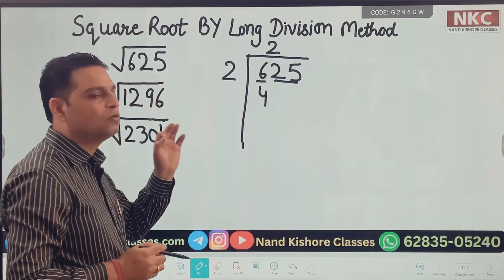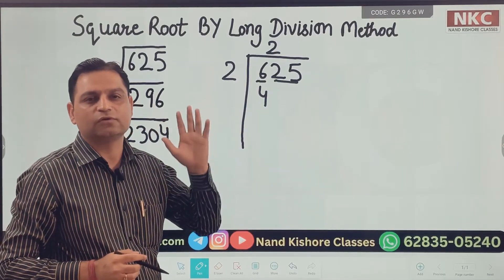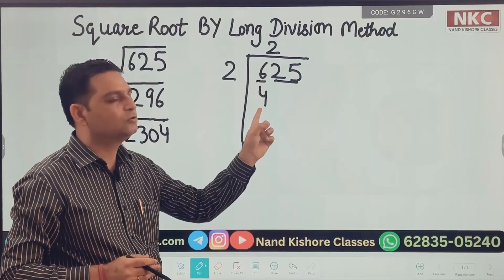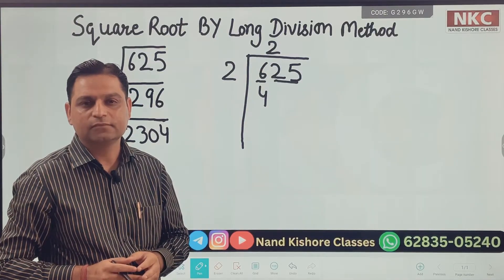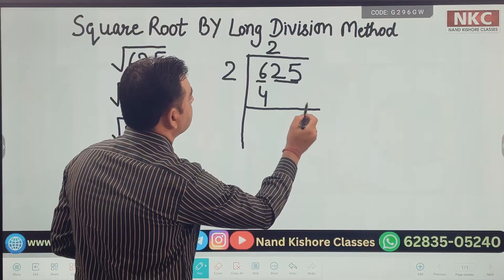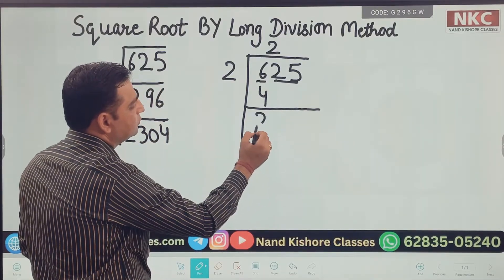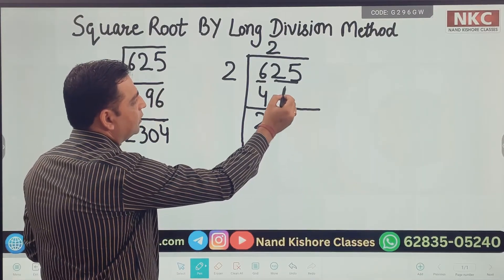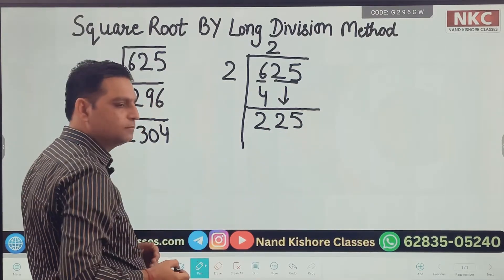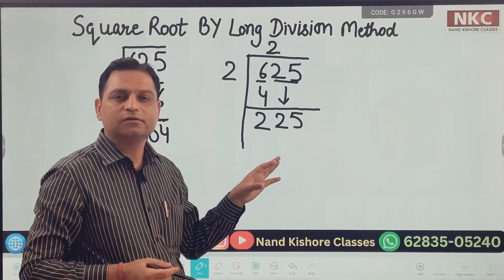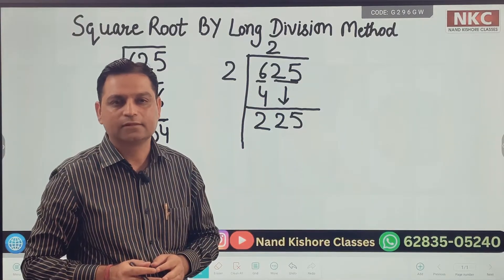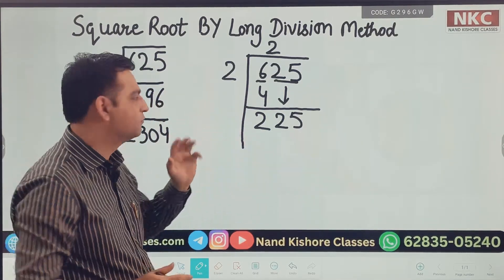Do remember, we always need to take perfect squares only. So that is why 2 multiplied by 2 gives 4. Then do the subtraction. 6 minus 4 is 2, and the full pair 25 comes down. In long division method, pairs always come down. Now we have got 225.